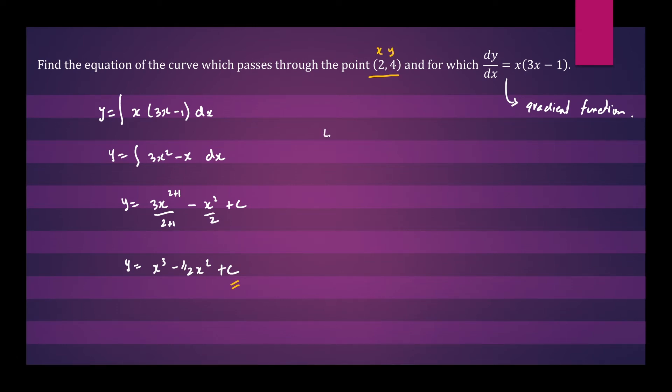So let's do that. We'll have 4 equals 2 cubed minus one-half times 2 squared plus c. So we'll get 4 equals 8 minus 2 plus c. 4 equals 6 plus c.